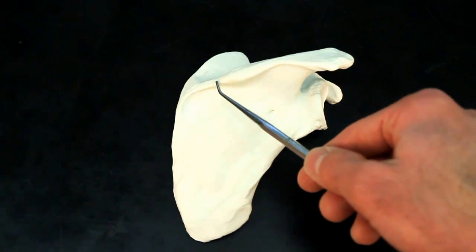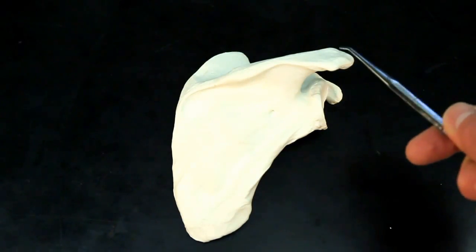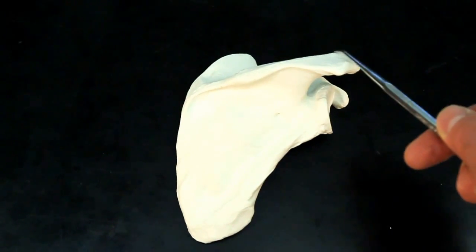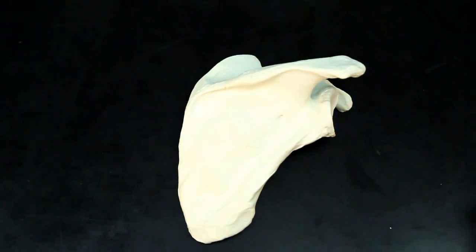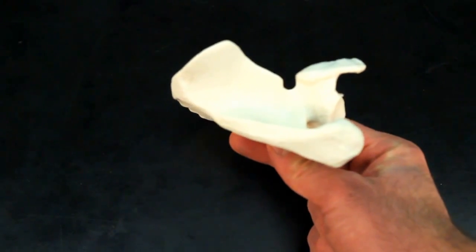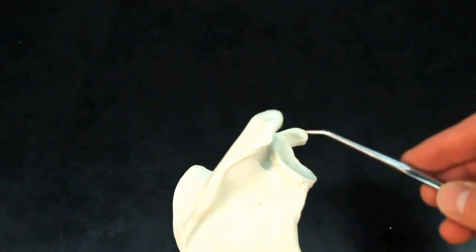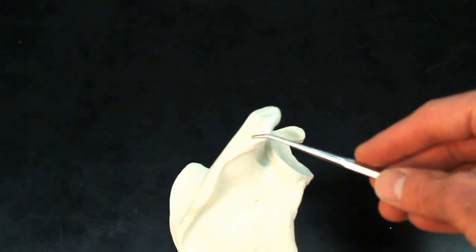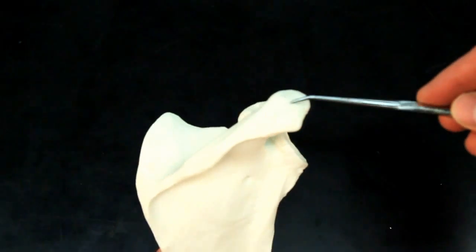If you follow the scapular spine up towards the lateral side of the bone, this protrusion right here is going to be your acromion process. Now, if we turn it so you're looking at the superior view, you can see how the acromion process is going to turn off of it. So right here, this is the acromion process.